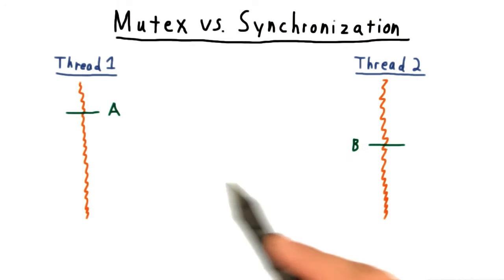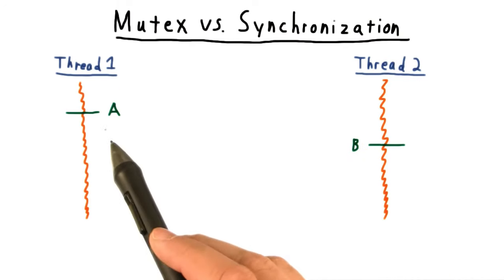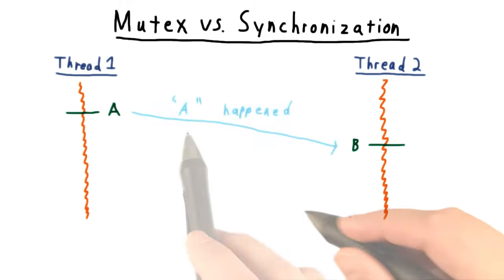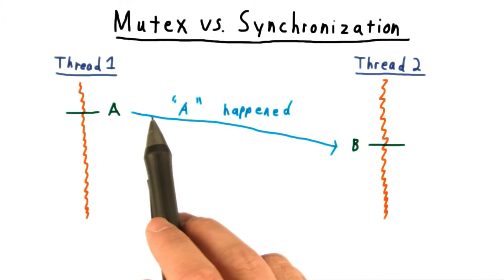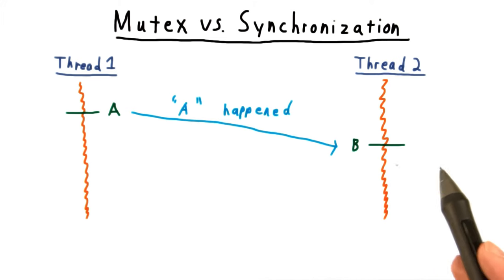For instance, it might be important that thread one complete some task A before thread two can start task B. In effect, we want the message that A happened to get sent to thread B.